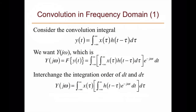We need to first look at the system in the time domain. Let's consider the convolution integral: the output signal y(t) is the convolution between the input signal x(t) and the impulse response h(t). If we want to find the frequency representation of this system, we can take the Fourier transform of the whole equation.